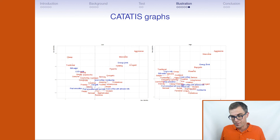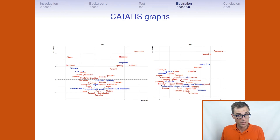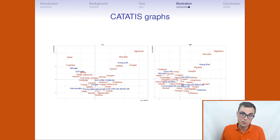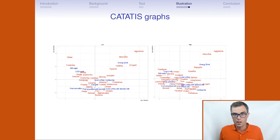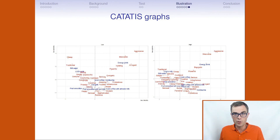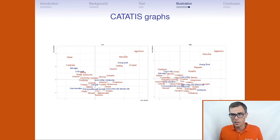The CATATIS graphs — which are the correspondence analyses on the compromise obtained by CATATIS for each of the two groups — highlight that subjects with low food neophobia are associated with energy drink and the attributes irritating and arrogant. This is not the case for subjects with high food neophobia. So the test alerts the user that there is a difference, but the graph allows the user to determine if this difference is interesting or not.